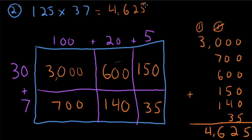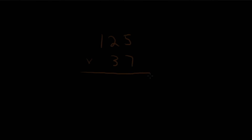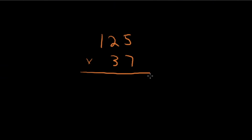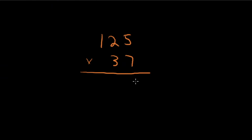Review where you made a mistake or struggled, then let's jump into the standard algorithm side. Let's see if we get the same answer. First, multiply the ones place: 7 times 5 is 35 — put 5, carry the 3.